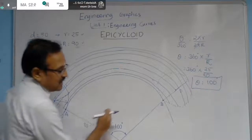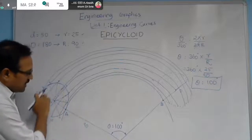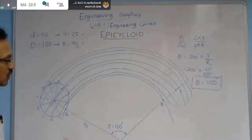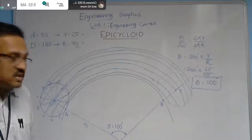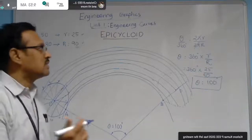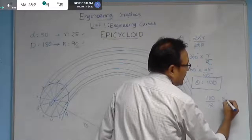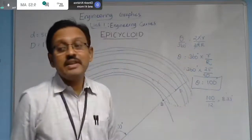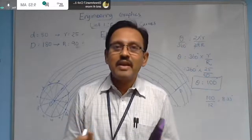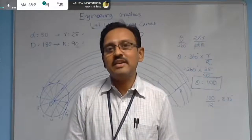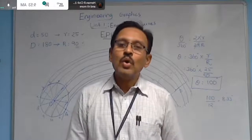Now divide the angle of 100 degrees into 12 equal segments. Since each segment would be 100 / 12 ≈ 8.33 degrees, and dividing 8.33 degrees precisely with a protractor is difficult, we use a geometric procedure. First bisect the 100 degrees into two 50-degree halves.